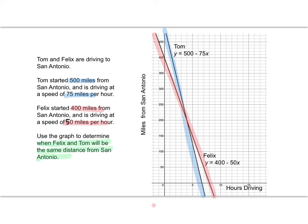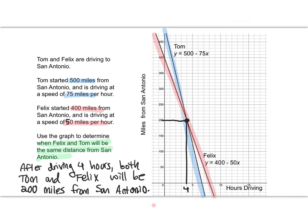So what do you think? Where is their distance the same? Well that would be at the point of intersection which is right there and where does that happen? Well it happens after four hours of driving and at that point they're both going to be 200 miles from San Antonio. So after driving for four hours both Tom and Felix will be 200 miles from San Antonio.